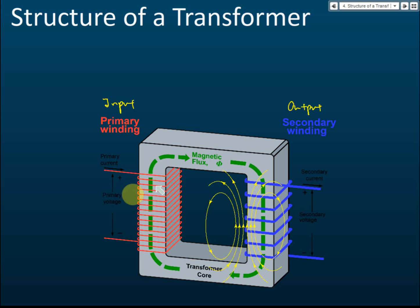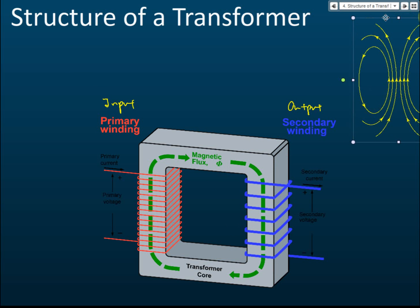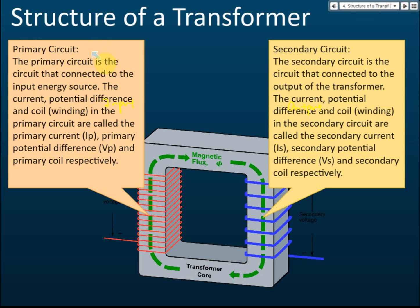In the primary winding we have primary current and primary voltage. The primary circuit is the circuit connected to the input energy source. The current, potential difference, and coil in the primary circuit are called the primary current, primary potential difference, and primary coil respectively. The primary current is denoted by the symbol Ip, and the primary potential difference is Vp.